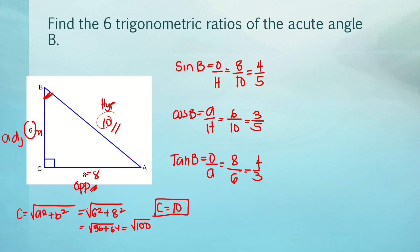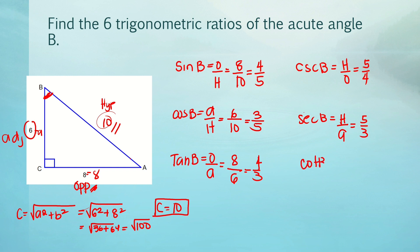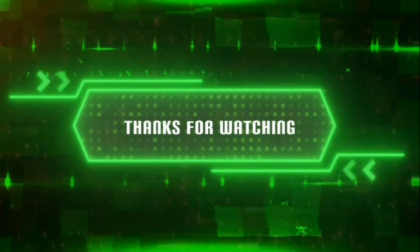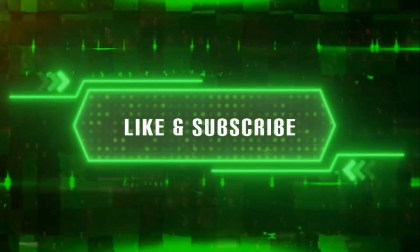The reciprocal of sine B is cosecant B, which is hypotenuse over opposite = 5/4. Next, secant B is the reciprocal of cosine B, which is hypotenuse over adjacent = 5/3. Lastly, cotangent B is the reciprocal of tangent B, which is adjacent over opposite = 3/4.